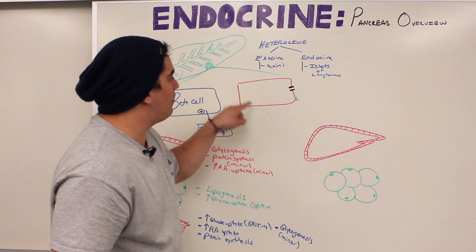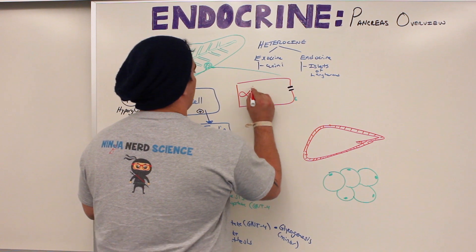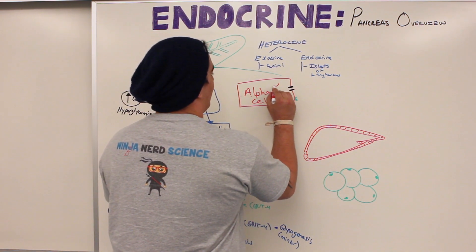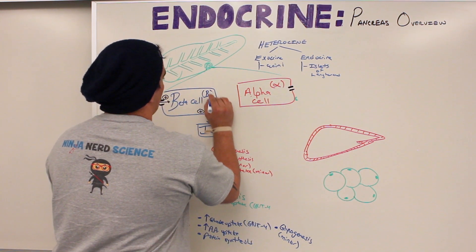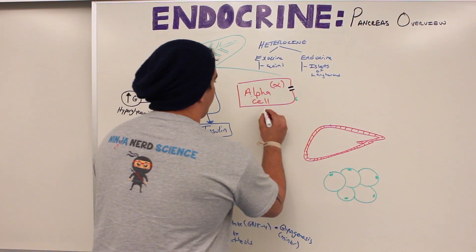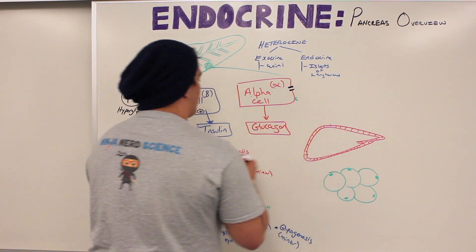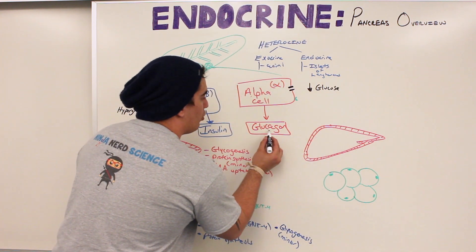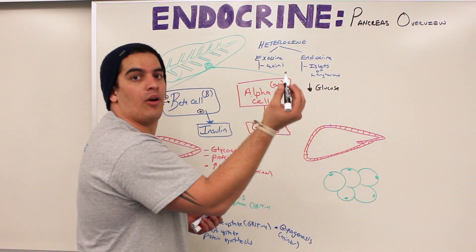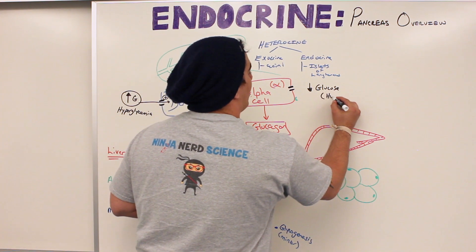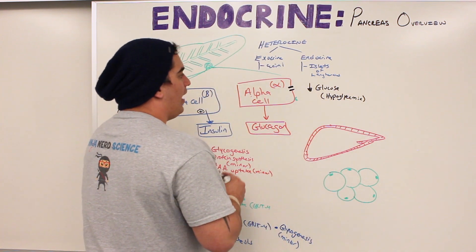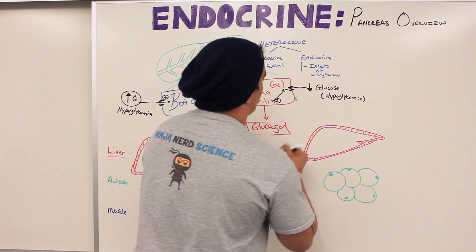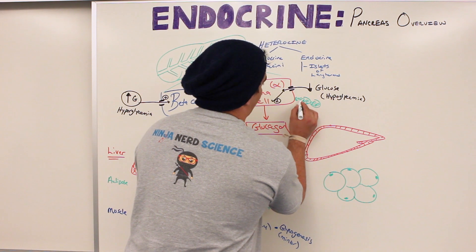The second cell type is the pancreatic alpha cell, which secretes glucagon. Glucagon responds to low glucose levels — hypoglycemia. A helpful memory tip: glucagon is secreted when glucose is 'gone.' There is also a second stimulus: the sympathetic nervous system via norepinephrine and epinephrine can stimulate the release of glucagon.